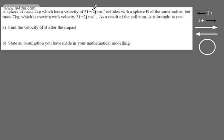This is the fourth video on impulse and momentum, and we're going to work through some more basic exam-style questions. In the first question, we're told a sphere A of mass 4 kilograms, which has a velocity of 3i minus 2j meters per second, collides with a sphere B of the same radius but mass 7 kilograms, which is moving with velocity 3i plus 2j meters per second. As a result of the collision, A is brought to rest. In part A we need to find the velocity of B after the impact, and in part B we need to state an assumption we've made in our mathematical modelling.